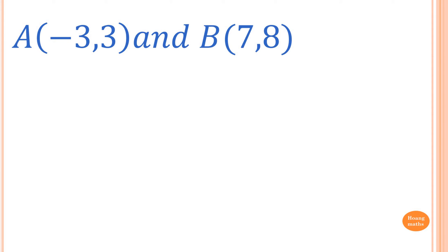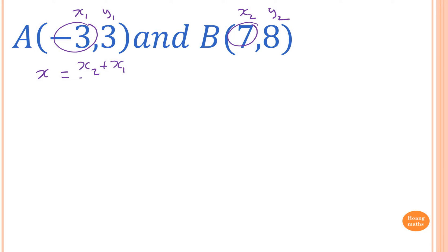Next example: point A is (-3, 3) and point B is (7, 8). We want to find the midpoint. Label A as x1, y1 and B as x2, y2. To find x, we use the formula: (x2 + x1) / 2 = (7 + (-3)) / 2 = (7 - 3) / 2 = 4 / 2 = 2.